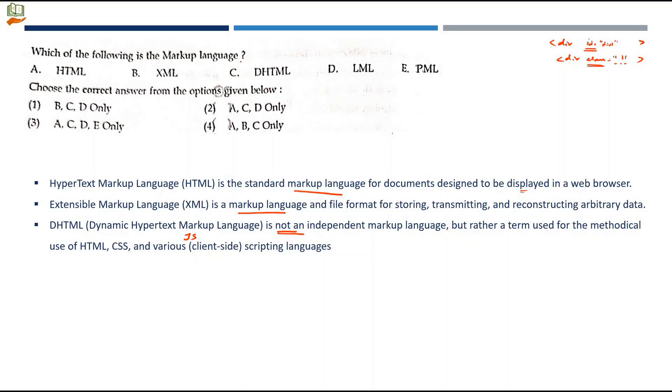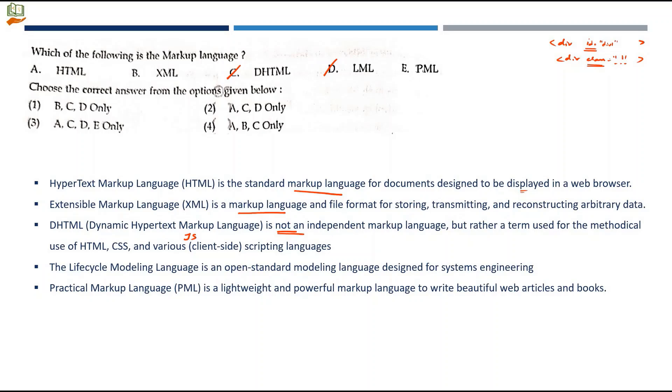C cannot be a markup language. Any option that includes C has to be removed, which means no option can be chosen if C is included. LML, the life cycle modeling language, is an open standard modeling language designed for systems engineering, not markup language. PML, Practical markup language, is a lightweight and powerful markup language to write beautiful articles and books. Though it is lightweight, they mentioned it is powerful. If you take the options HTML, XML, and PML will be the right answer. You cannot go for A, B, and C because C is not a markup language.